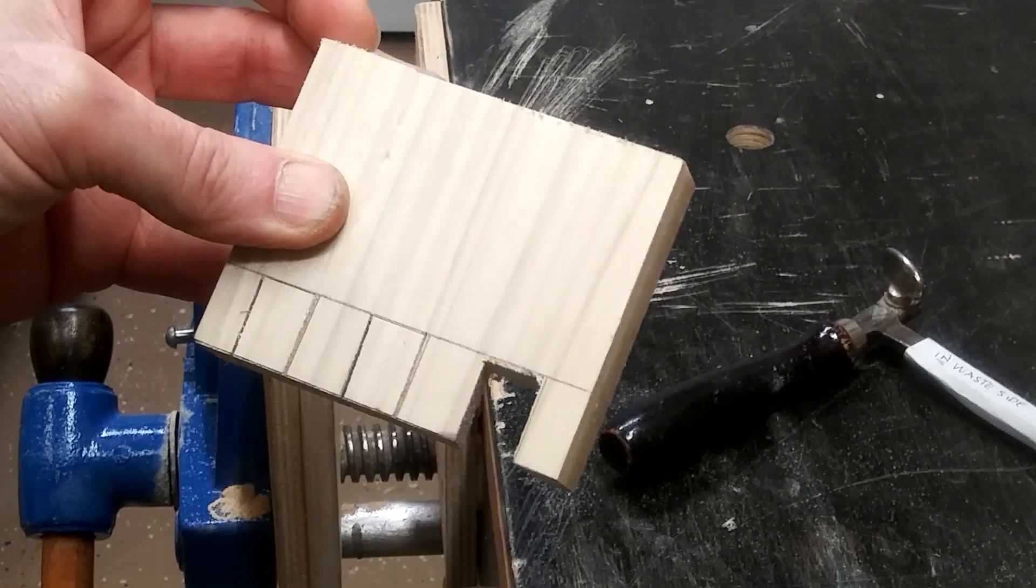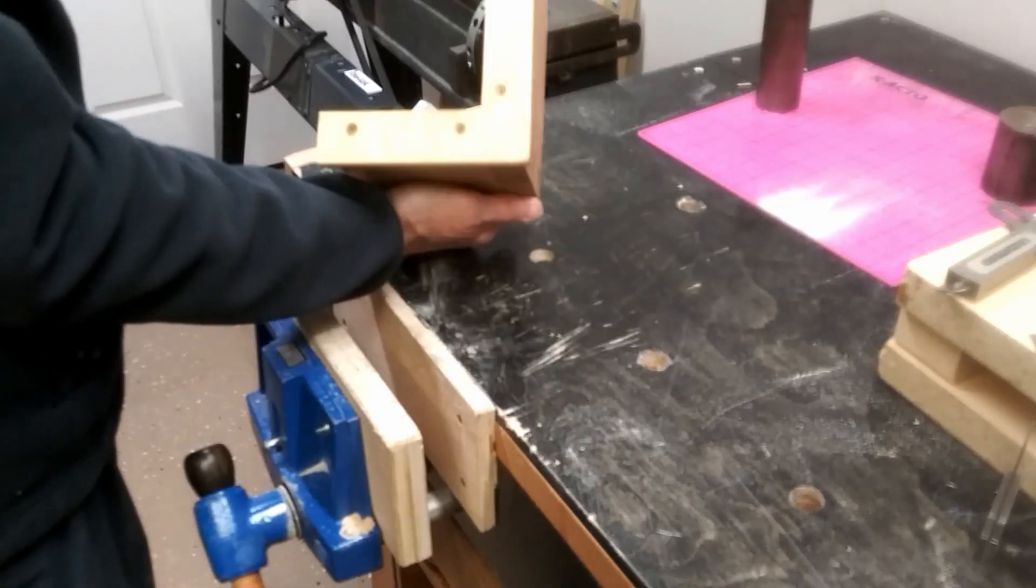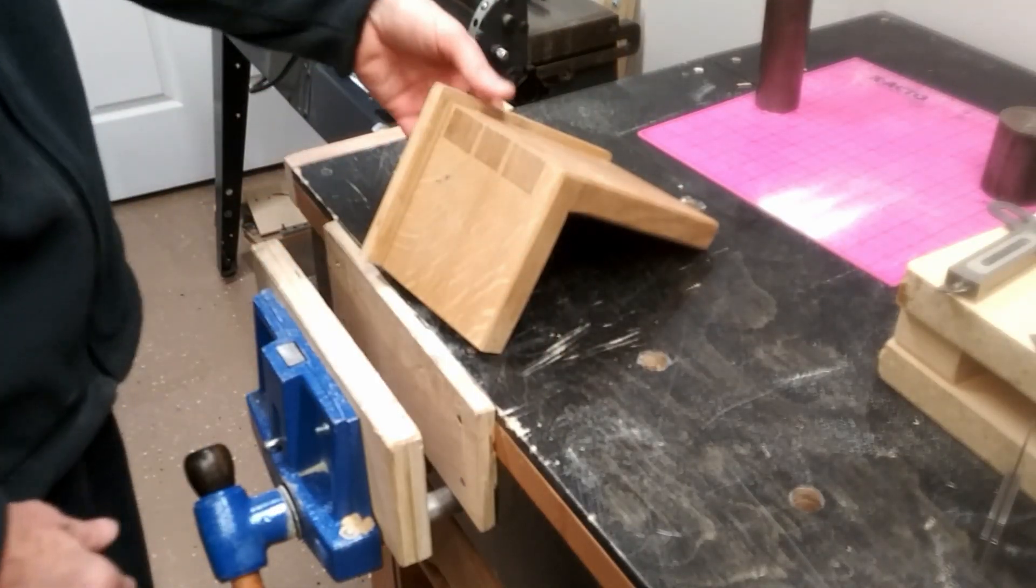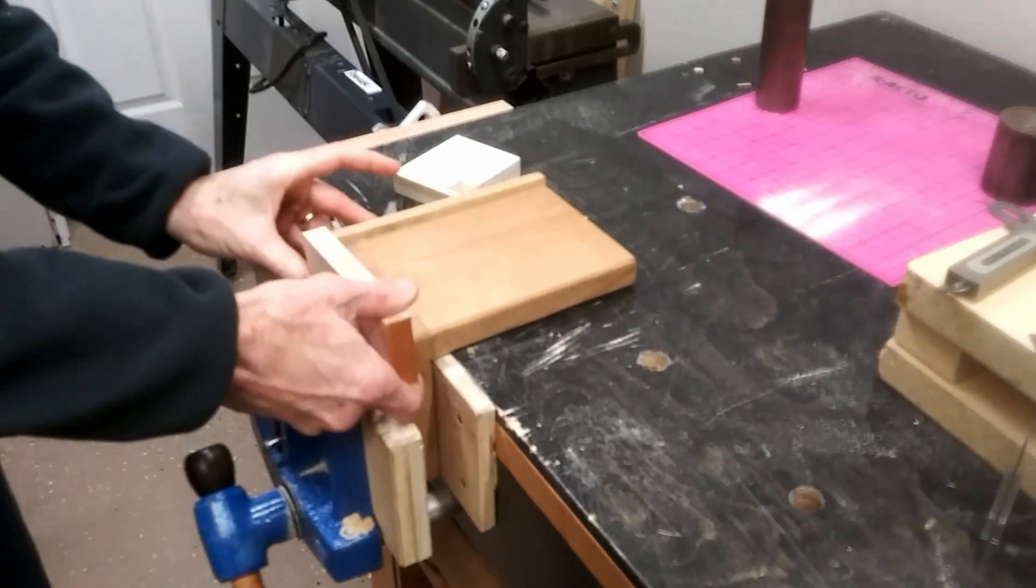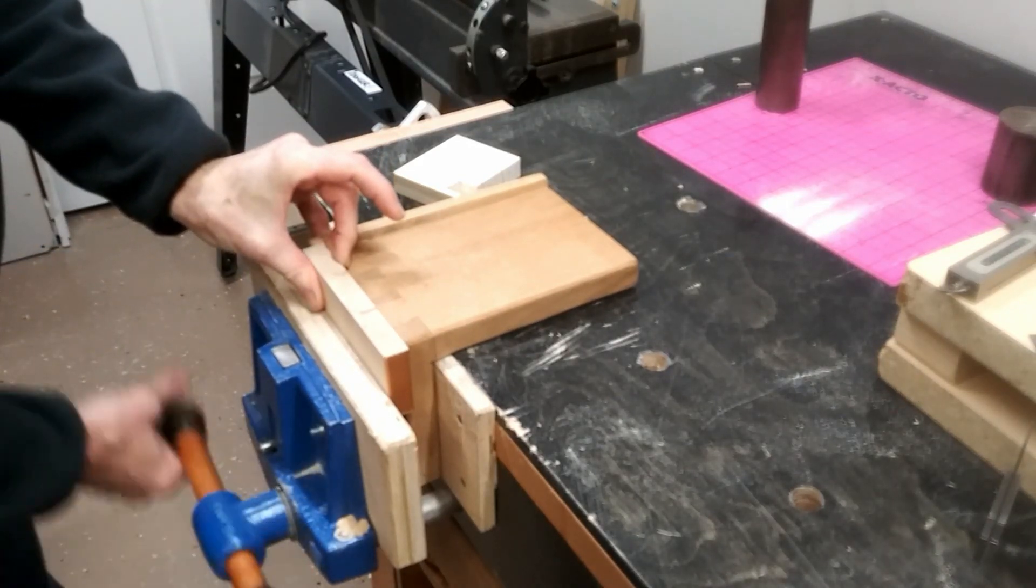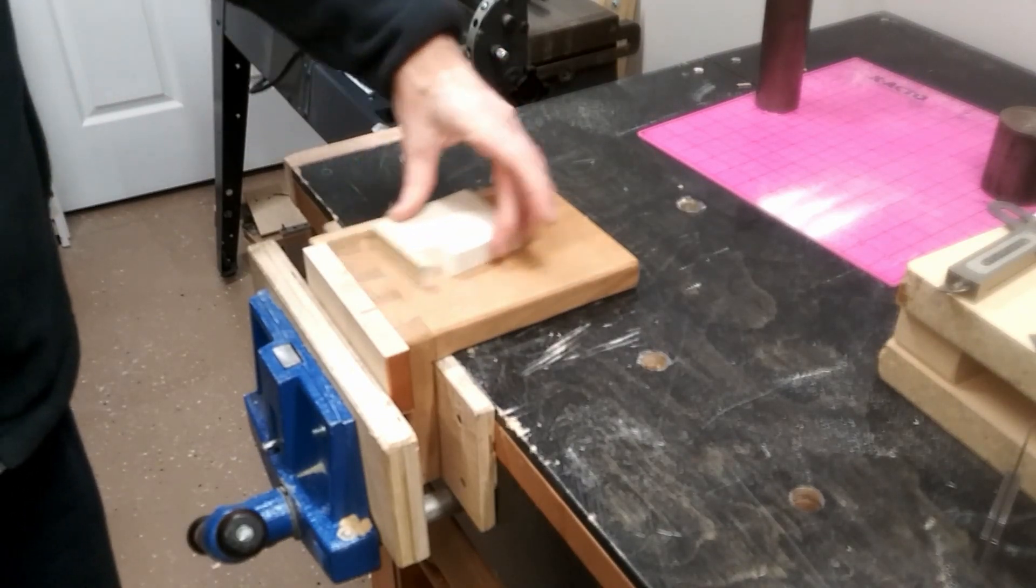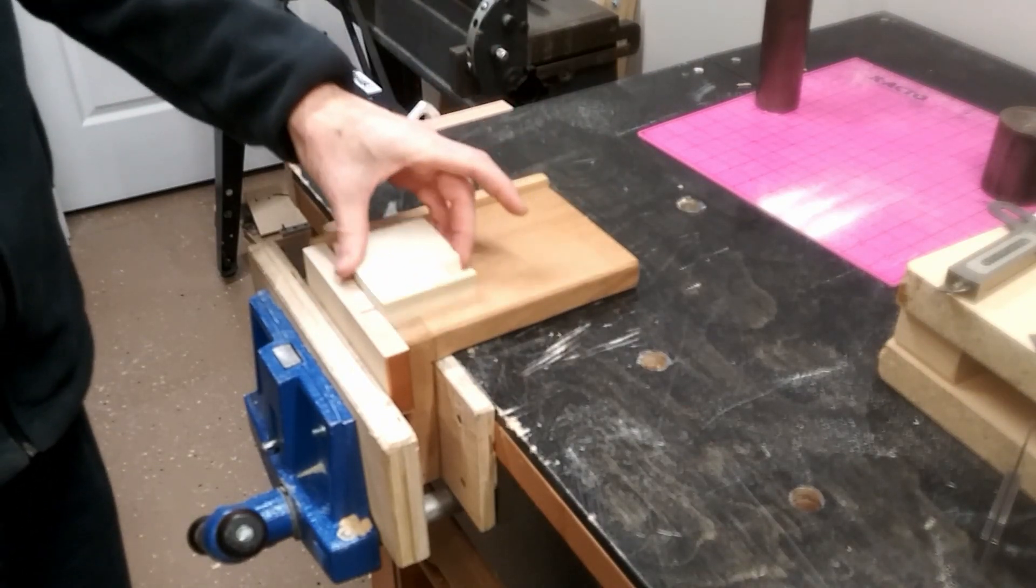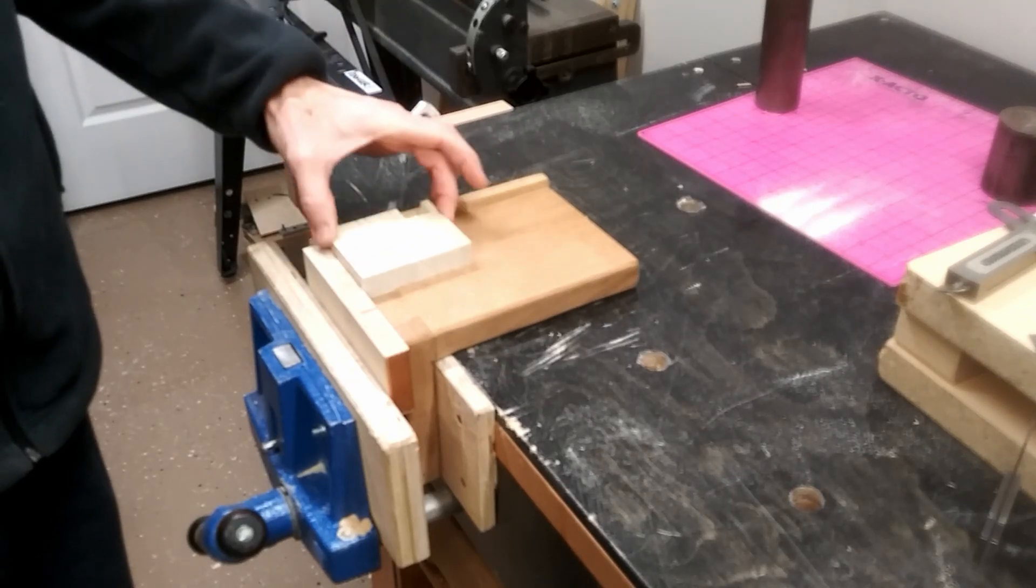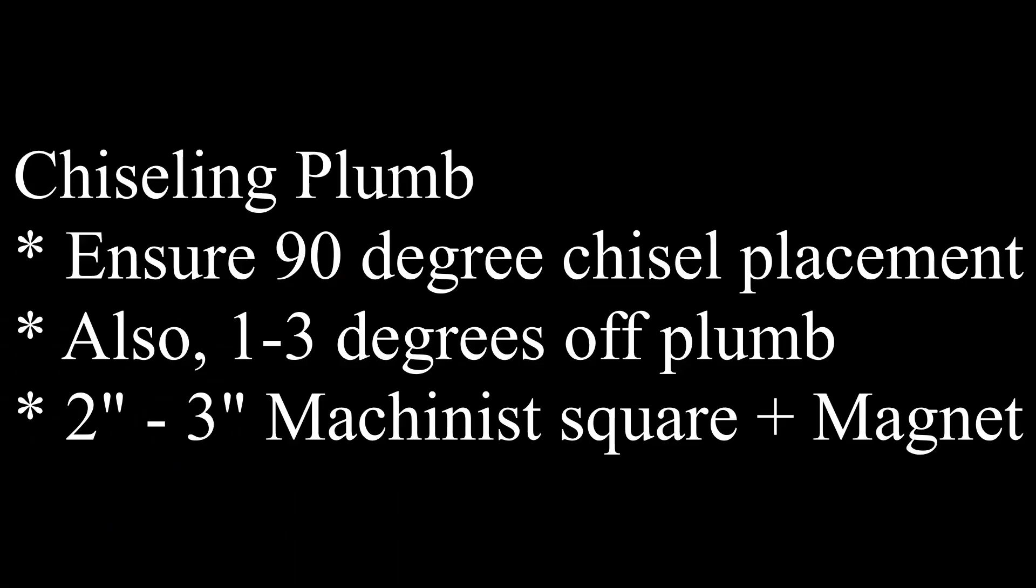I did make an alignment board like David Barron has for lining up my tails and pins, but I found another use for it. If I clamp another board in here, by the way it's the same board I'm using for the other purpose, then I've got a little area that I can jam into while I'm chiseling and push up against. It's easier than working out on the bench.